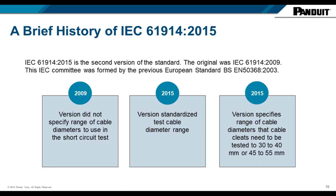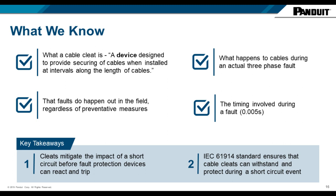A brief history of the standard: it started as a European standard, BS EN 50368, in 2003. It was opened to an international audience and the first IEC edition was released in 2009. Further work resulted in the second revision in 2015, and we are currently working on further improvements — possibly to cover HV cables and other aspects — to make it a stronger standard going forward.